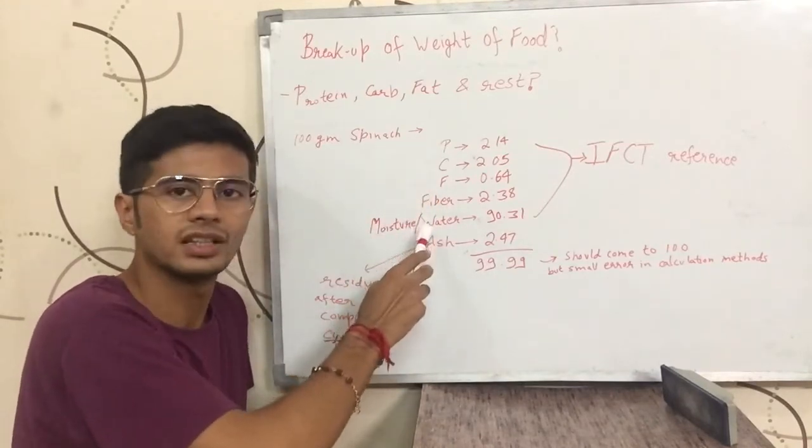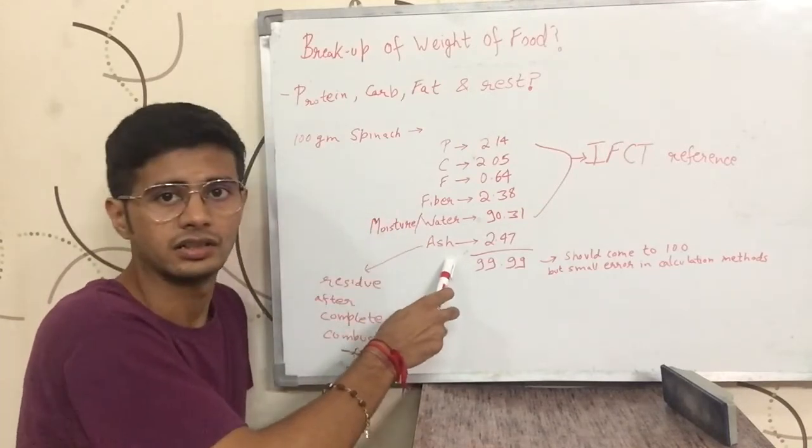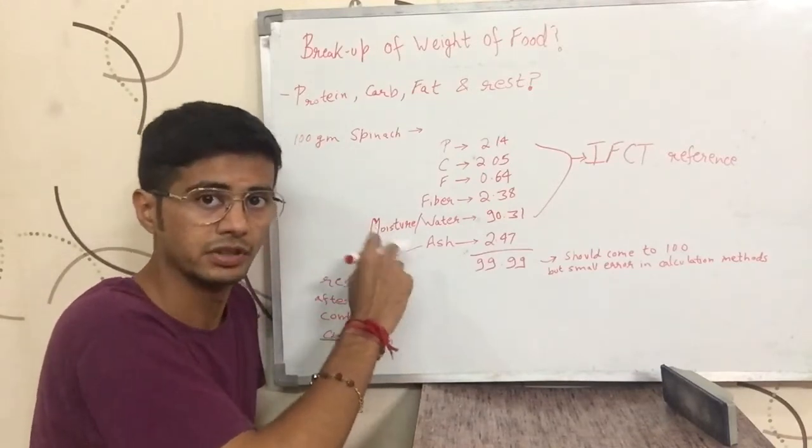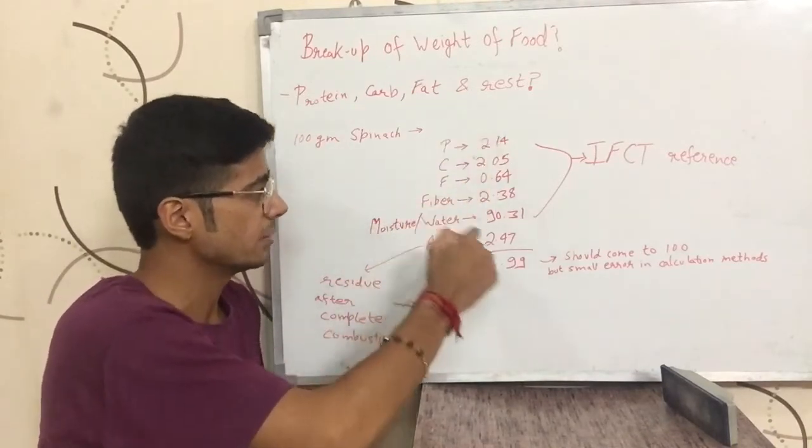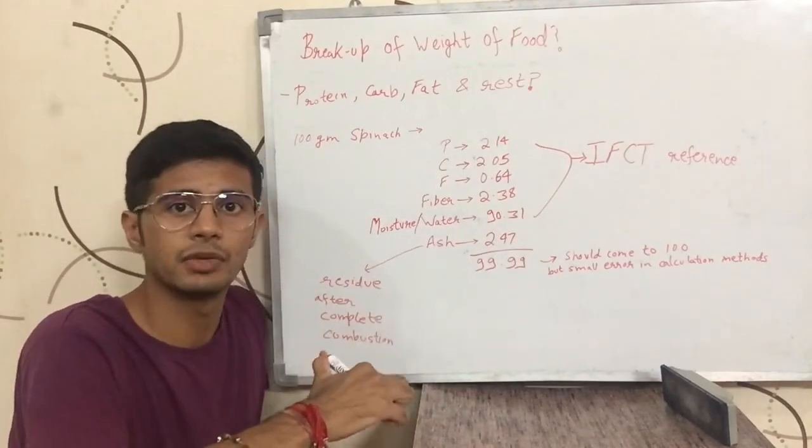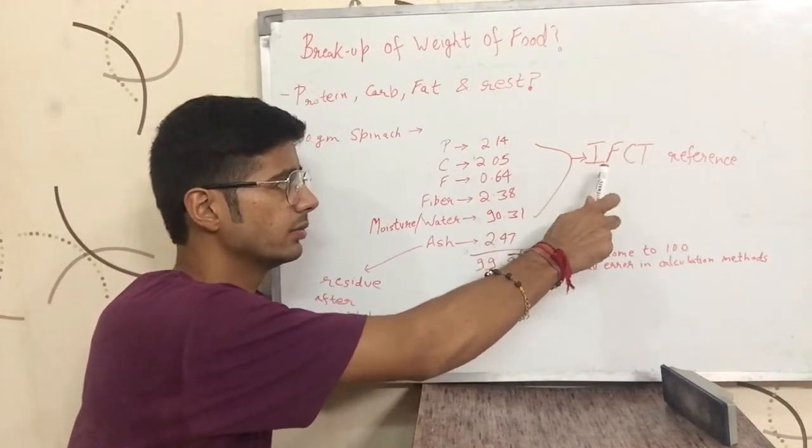It includes water and ash also. So where did I get all these numbers? We did not get all these numbers so easily. I got them from the Indian Food Composition Table.